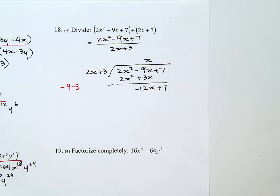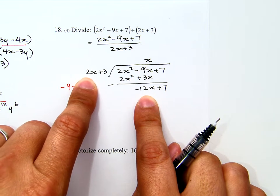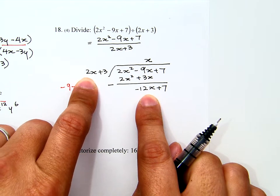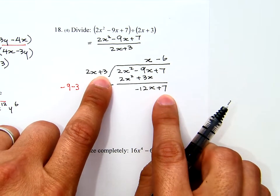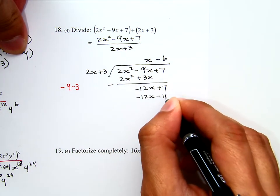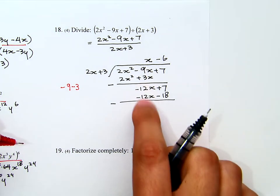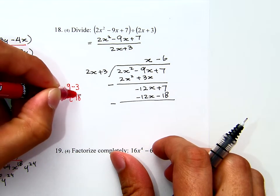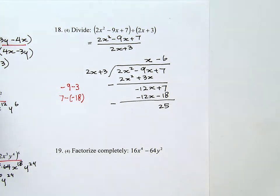I ask myself again. I repeat the process. 2x times what gives us negative 12x here. So 2x times negative 6 will give us negative 12x. We don't worry about 3 and the 7. We will worry about that later. This is negative 12x minus 18. And then I subtract again. Of course this will cancel, and 7 minus negative 18, you will see that's actually 25.